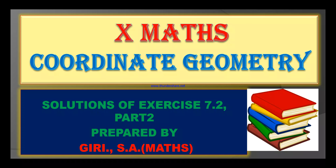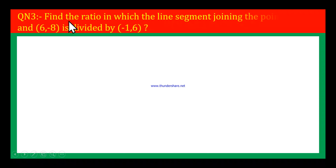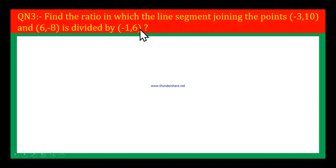Dear students, this is exercise 7.2 and question number 3. Find the ratio in which the line segment joining the points (-3, 10) and (6, -8) is divided by (-1, 6).